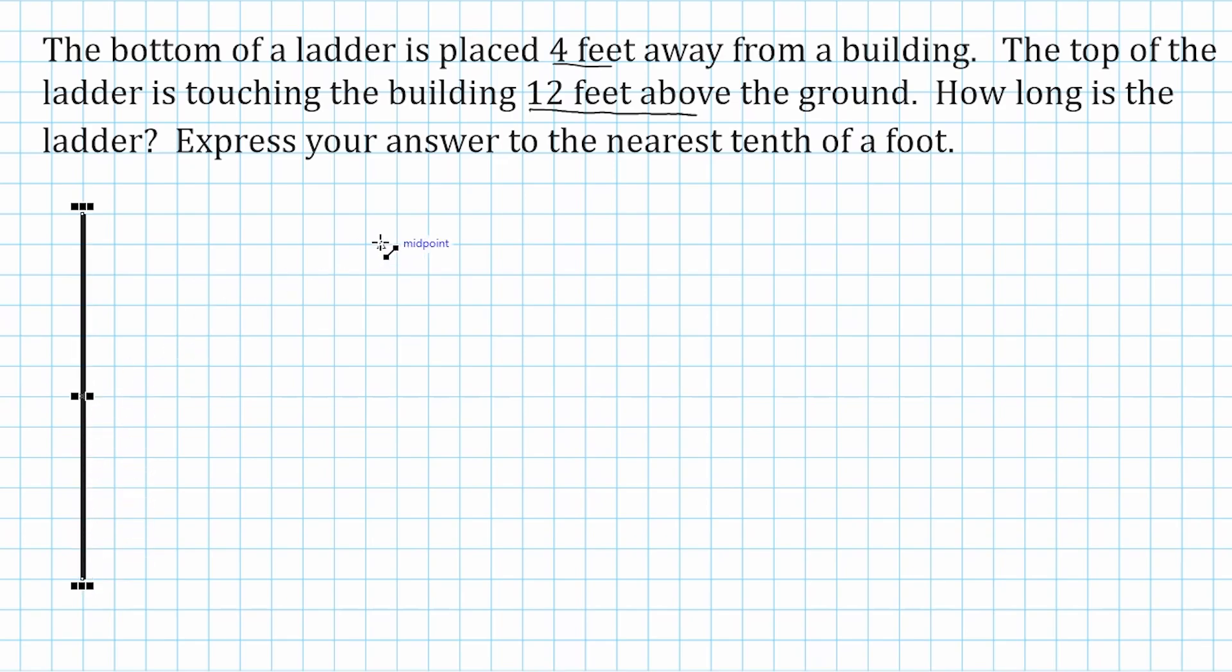So it was given in the word problem that the ladder is touching the building 12 feet above the ground. So all we need is 12 feet in height of that building. And it goes on to say that the bottom of the ladder was placed 4 feet away from the bottom of the building. So here's the building, and we're going to make a distance that is 4 away from that. So the top of the ladder is right here, 12 feet above the ground, and the base of the ladder is 4 feet away from the bottom of our building.